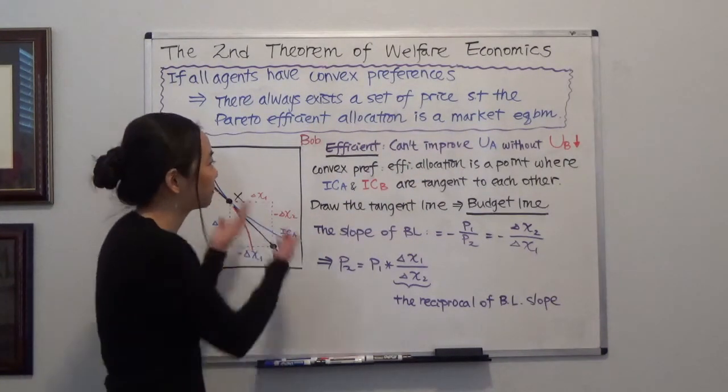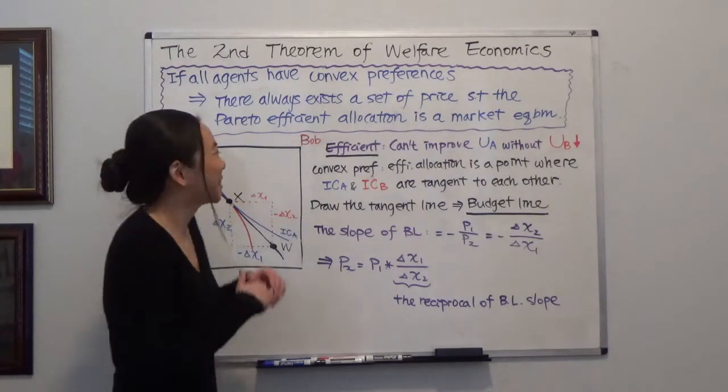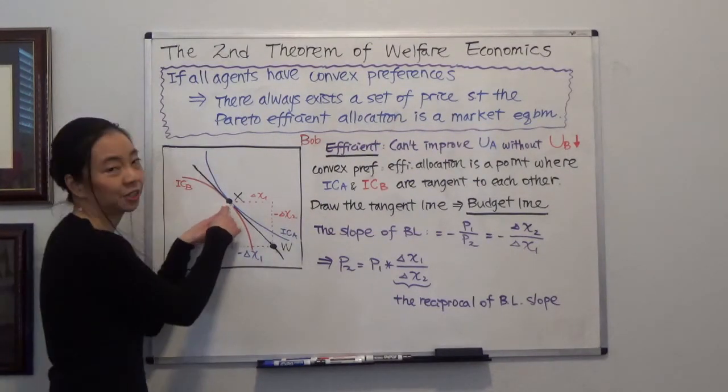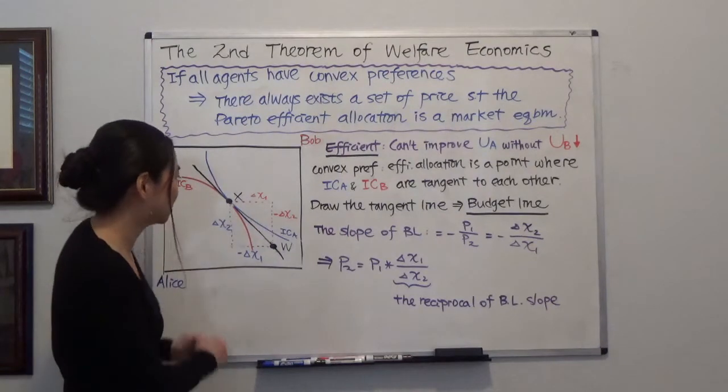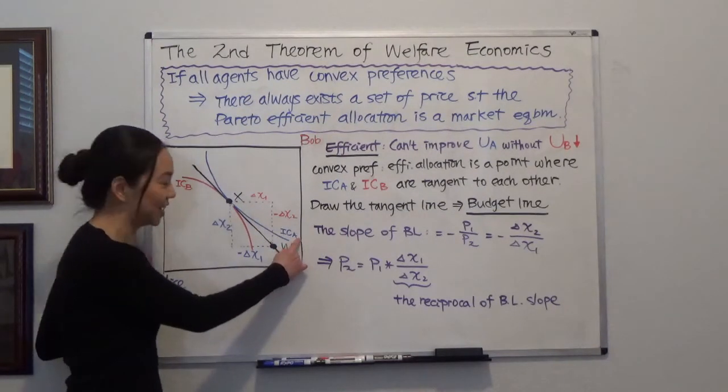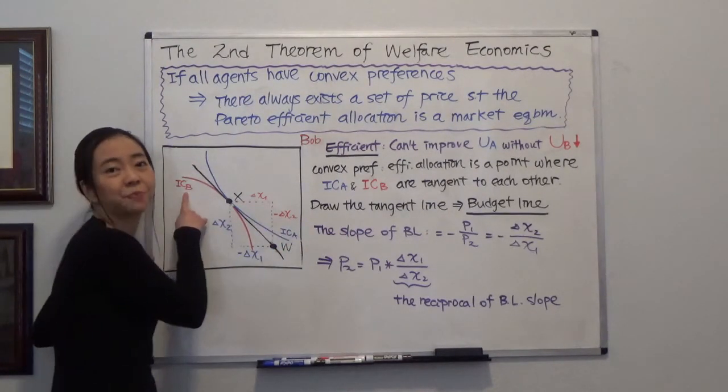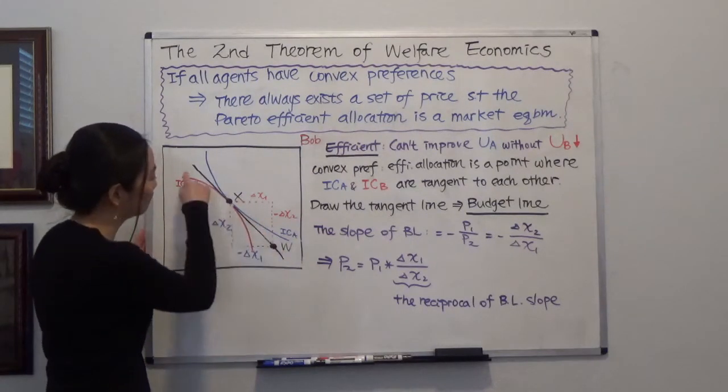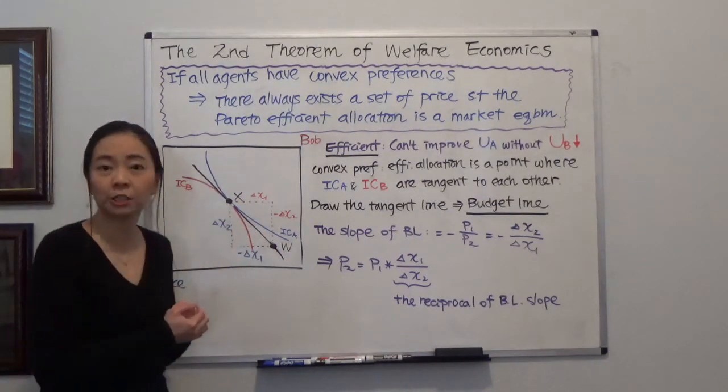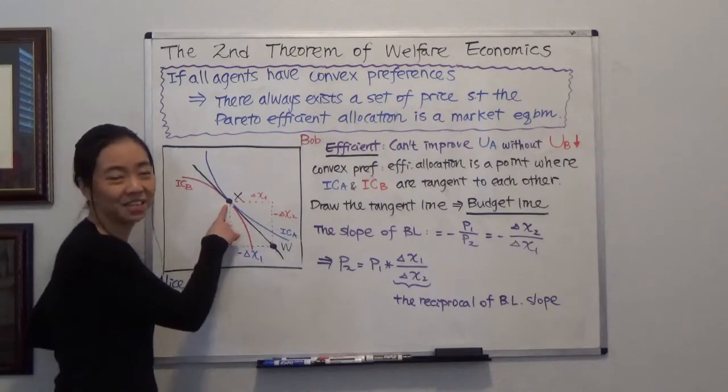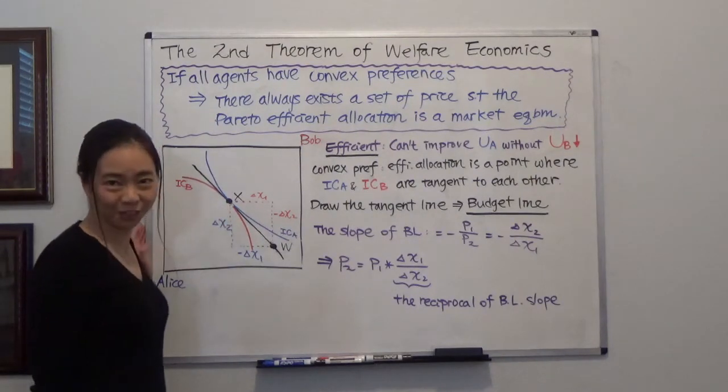And now if all agents have convex preferences, that means an efficient allocation must be at the tangent of the indifference curve of Alice and the indifference curve of Bob. So these two indifference curves must touch each other only once at point X. So X is an efficient allocation.